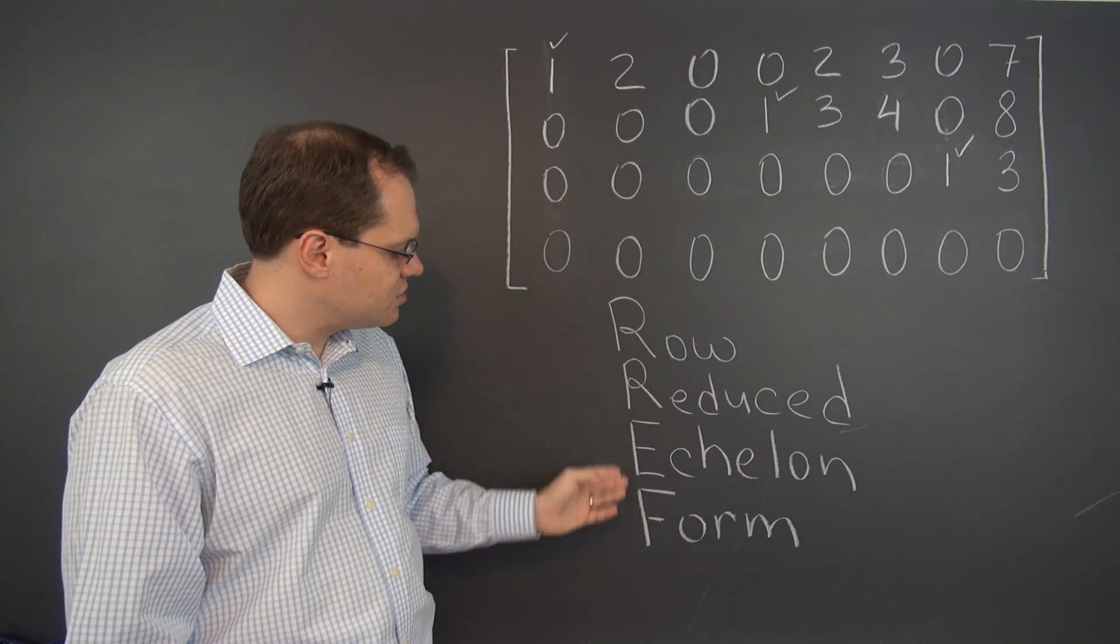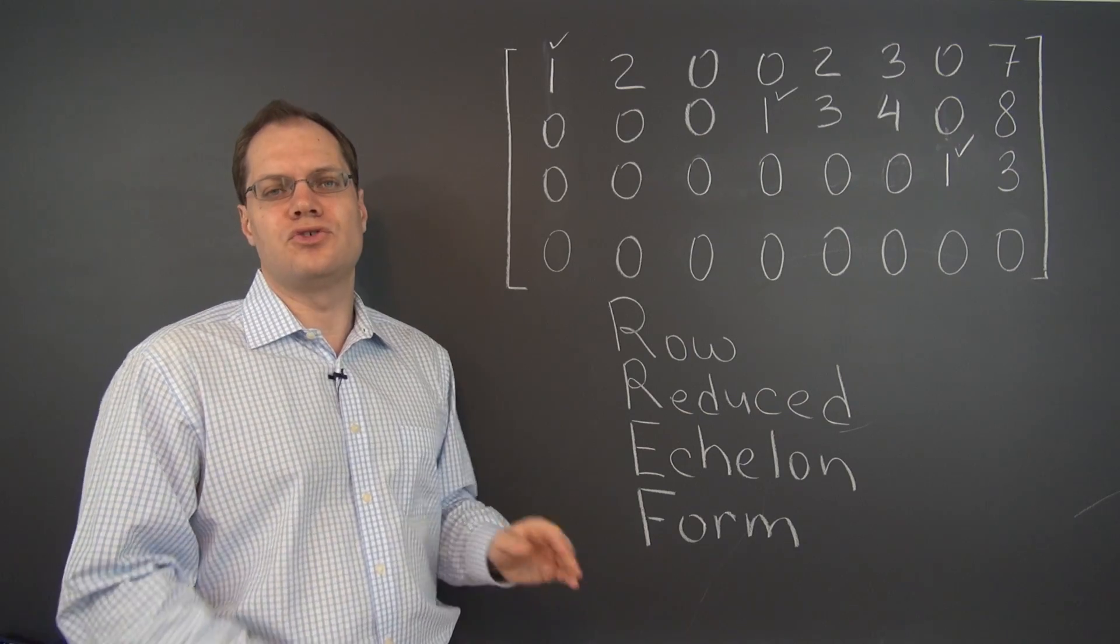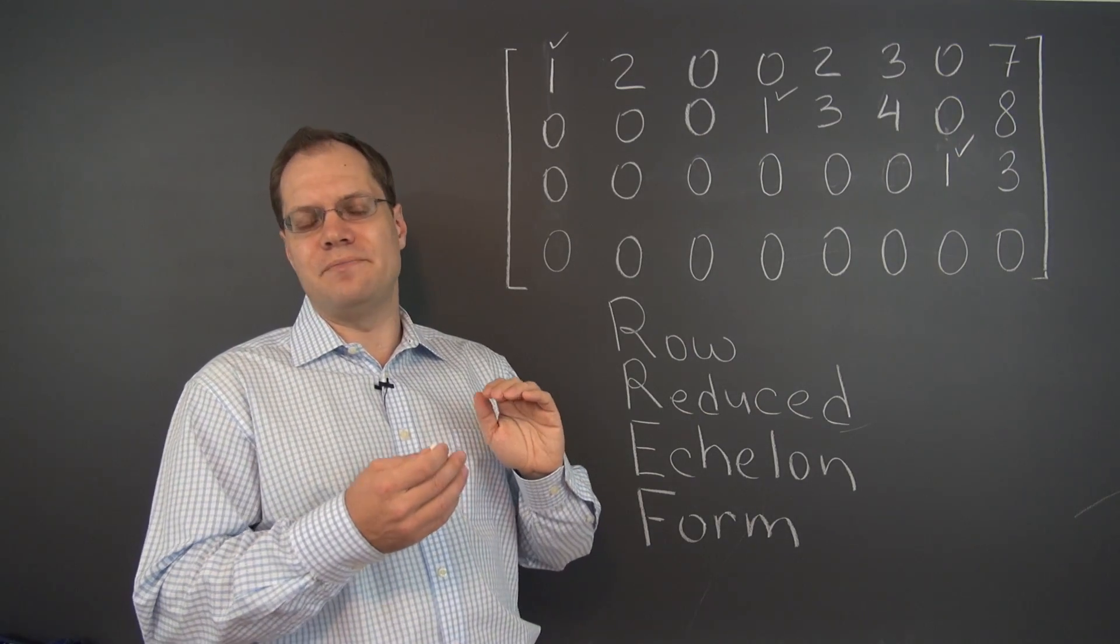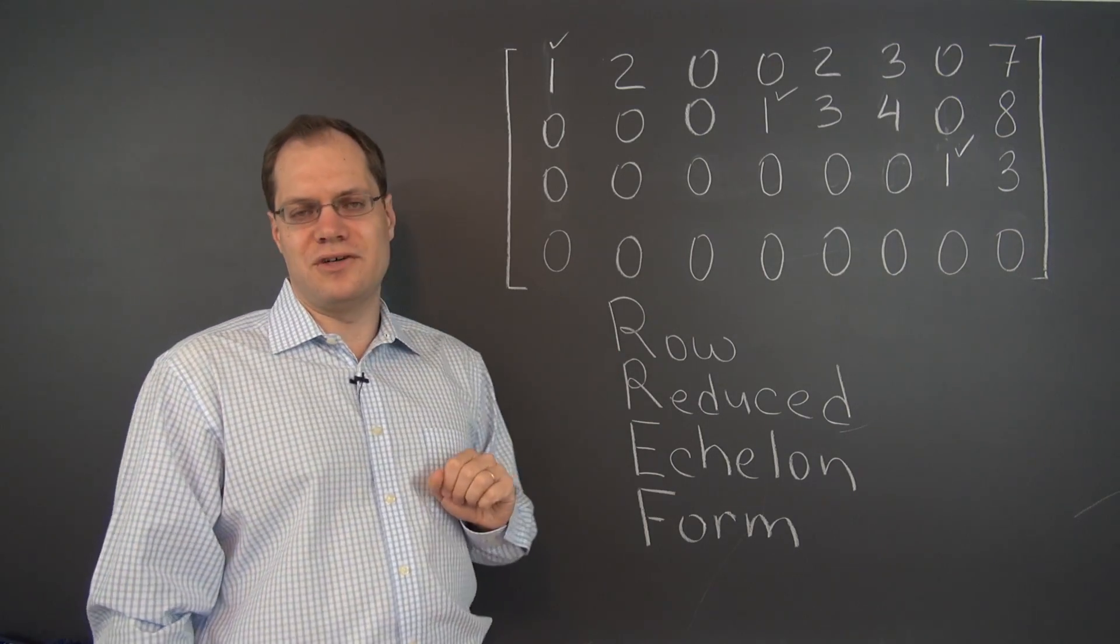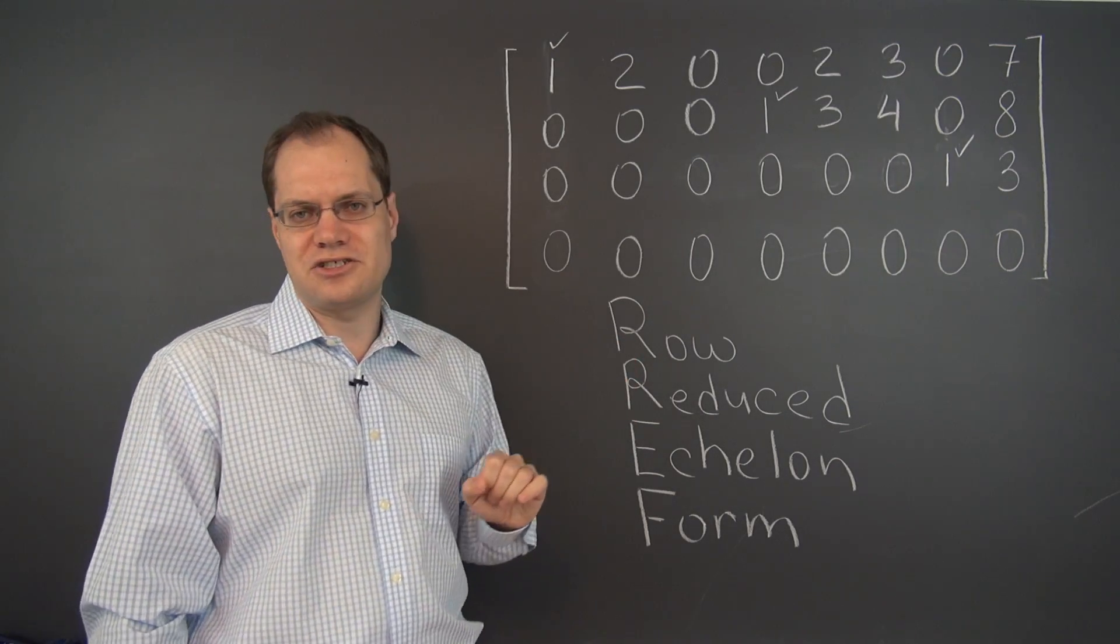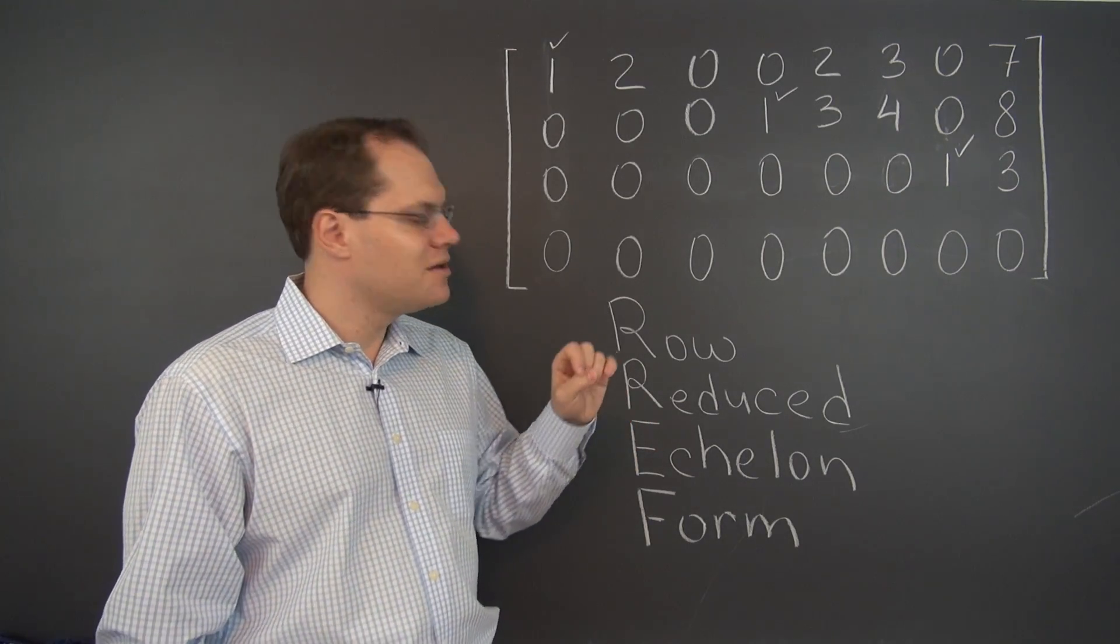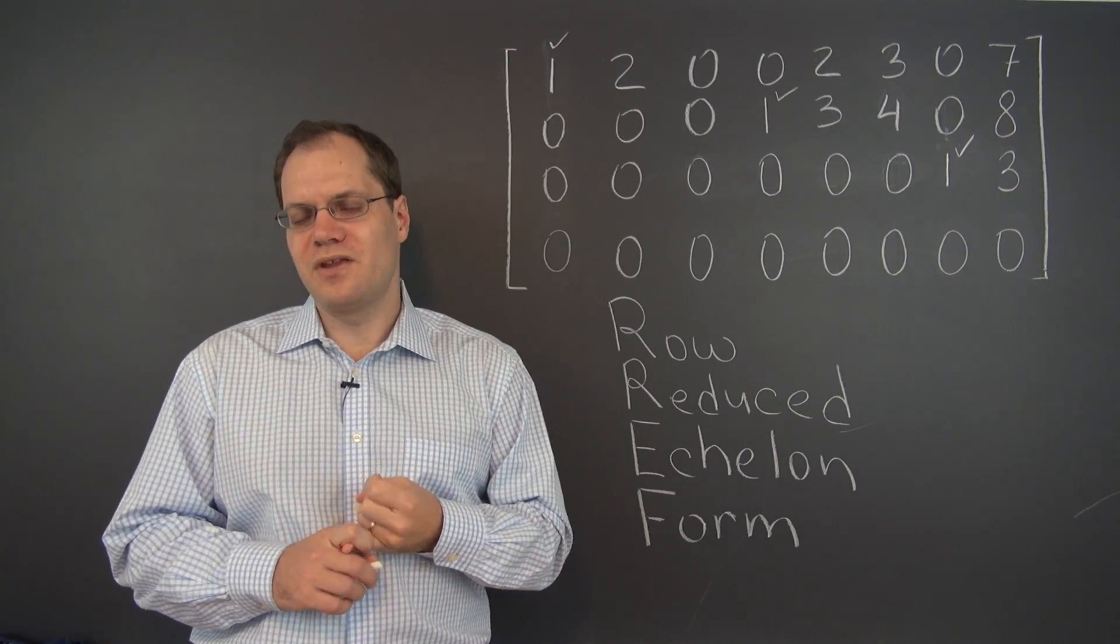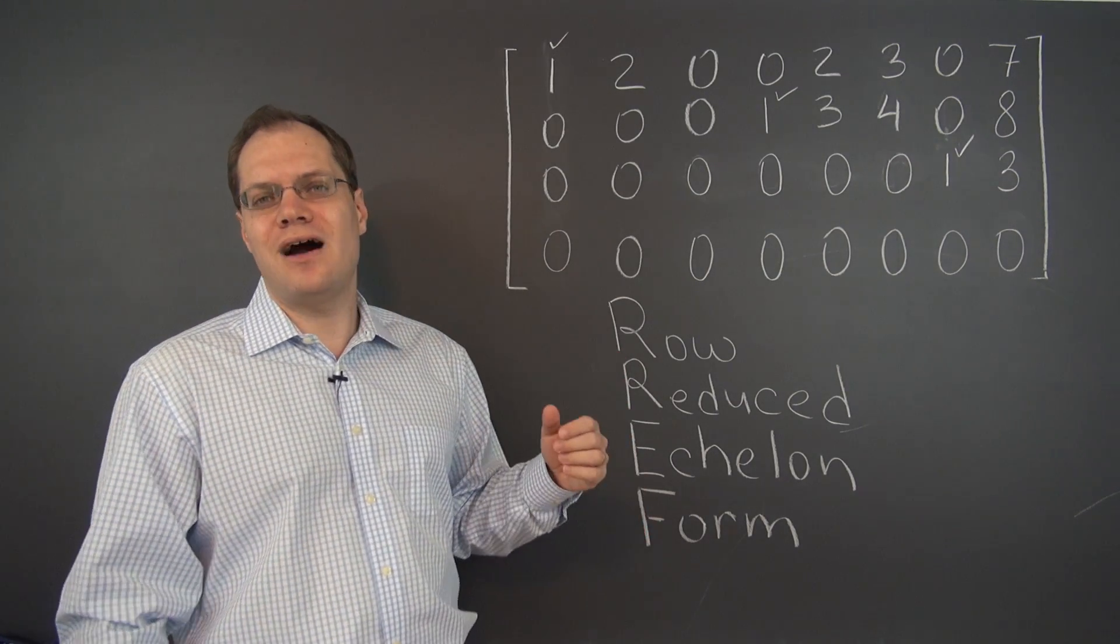Sometimes this term is pronounced reduced row echelon form. So row echelon form means that pivots need not be ones. And reduced row echelon form, or row reduced echelon form, just because it sounds nicer putting the word reduced second, means that pivots equal one. So that's pretty much RREF from the column point of view.